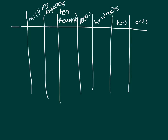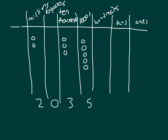Depending on where we put place value disks within the place value chart, we can model different numbers. So there are two millions there. And let's draw some more — we have three ten-thousands there. Thinking about what this is worth: put a two there, a zero for hundred-thousands, three for ten-thousands, five for thousands, and then we still need placeholders — zeros for the ones, tens, and hundreds.